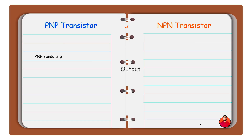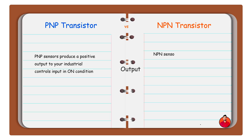PNP sensors produce a positive output to your industrial control's input in on condition. NPN sensors produce a negative signal during an on state.